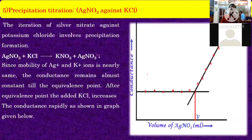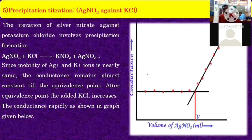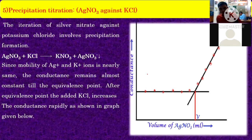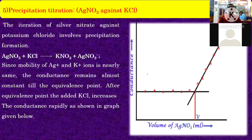Next, precipitation titration: AgNO₃ against KCl. This was previously discussed in volumetric analysis, but here it is conducted with the help of a conductivity meter. The titration of silver nitrate against potassium chloride involves precipitation formation. When AgNO₃ and KCl — both ionic compounds — react with each other, potassium nitrate and AgCl (black precipitate) are formed in the conical flask.